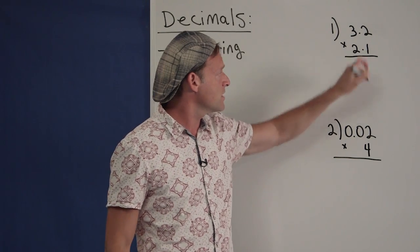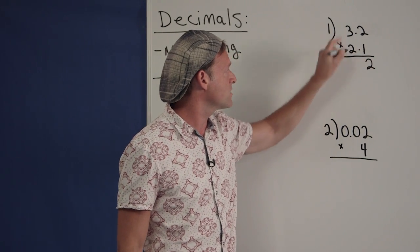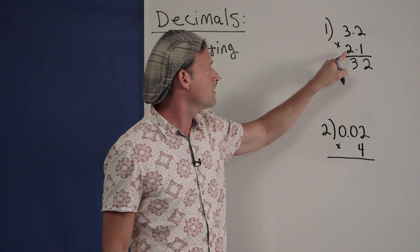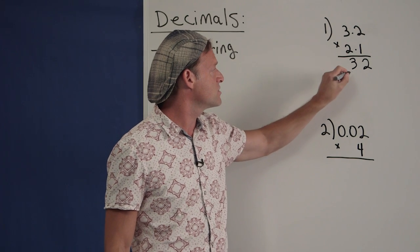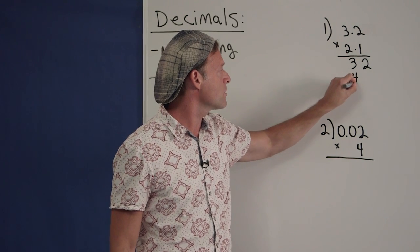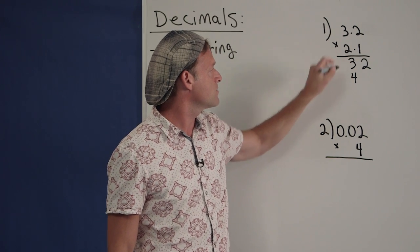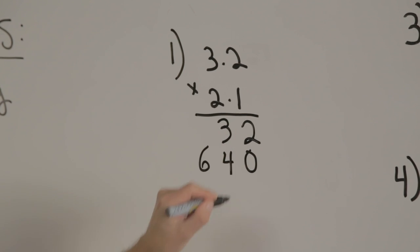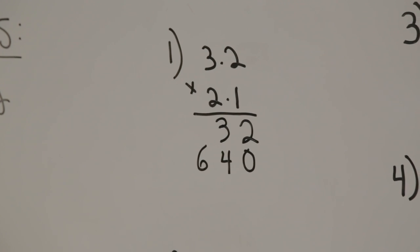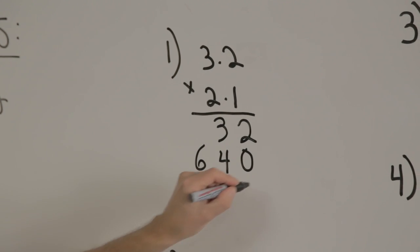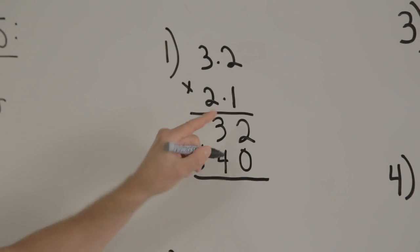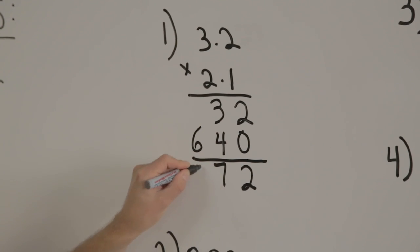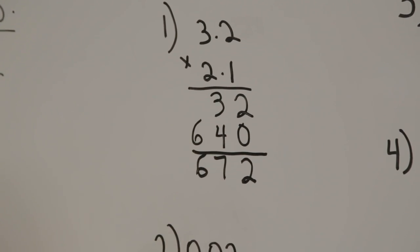We're going to do 1 times 2, which is 2. 1 times 3 is 3. 2 times 2 is 4. 2 times 3 is 6. Some people like putting a zero here for balance. Bring all the numbers down: 2, 7, 6.